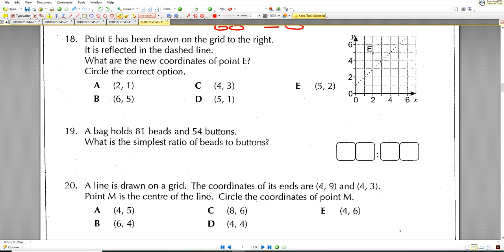Question number 18. Point E has been drawn in the grid to the right. It is reflected in the dashed line. Important that you do not do this. Reflections don't go down. They go across the mirror at 90 degrees to the mirror. So our reflection will be here. So it's 1 that way, 1 this way. So the answer will be 4, 3.